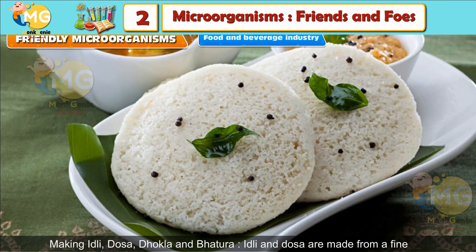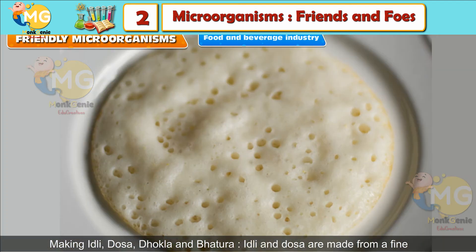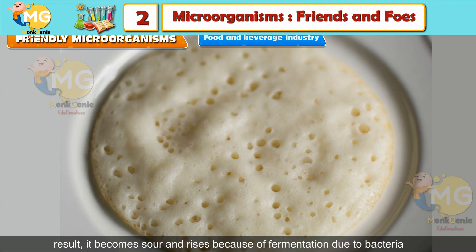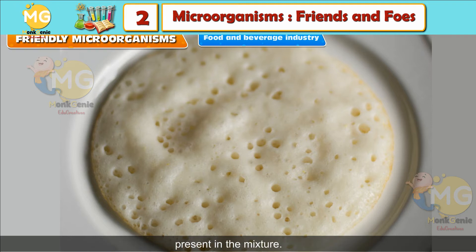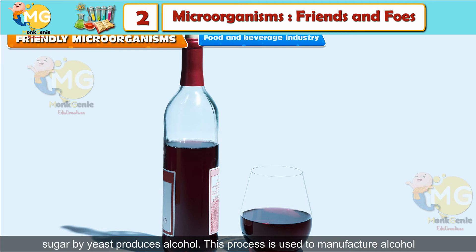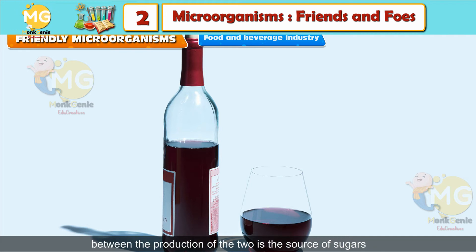Idli, dosa, dhokla and batura are also made using fermentation. Idli and dosa are made from a fine paste of pulse and rice. This mixture is allowed to stand for a few hours. As a result, it becomes sour and rises because of fermentation due to bacteria present in the mixture. Fermentation of sugar by yeast also produces alcohol, which is used to manufacture alcoholic drinks such as beer and wine.